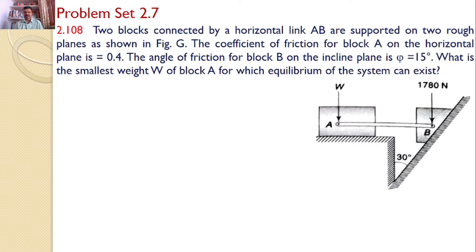That means there are two blocks A and B resting on these two surfaces. A prismatic bar AB is connecting these two blocks. Here, the coefficient of friction is 0.4, but here the angle of friction phi is equal to 15 degrees. What is the minimum weight W for which the equilibrium should exist? So, for that, we will draw the free body diagram for both blocks A and B.